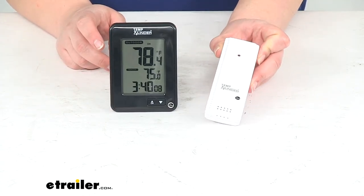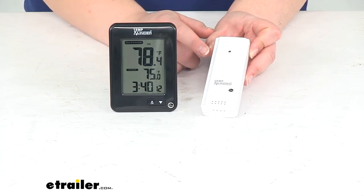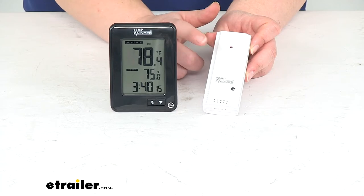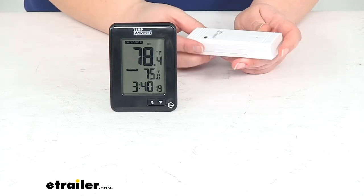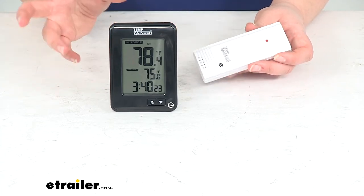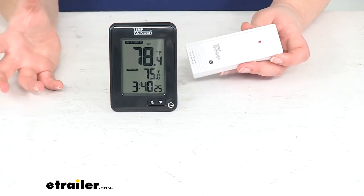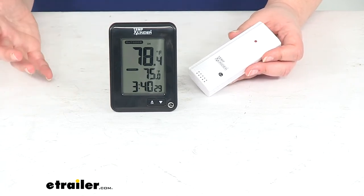We can place this somewhere else to monitor the temperature in a different location. This is handy for putting in your freezer or refrigerator to make sure the temperature stays nice and cold, or maybe in the lower compartment of your RV to make sure your pipes aren't going to freeze, or somewhere where your pet is to make sure they're not getting too hot or too cold.